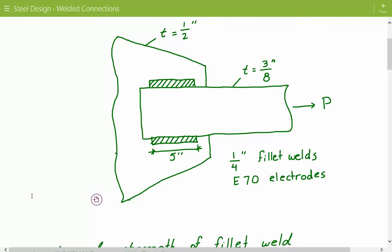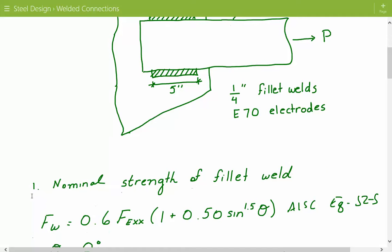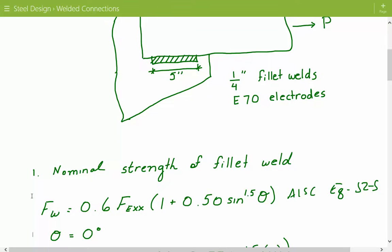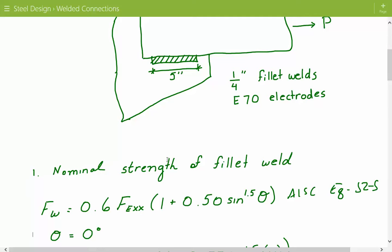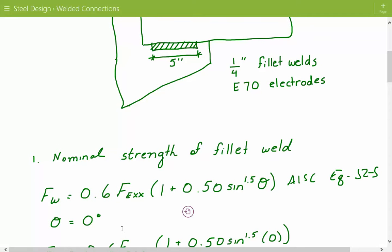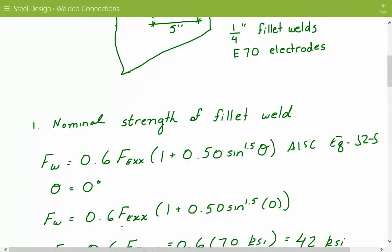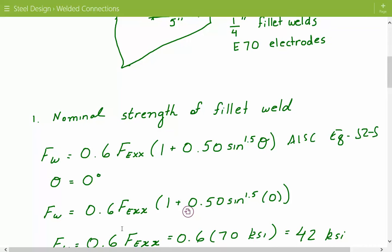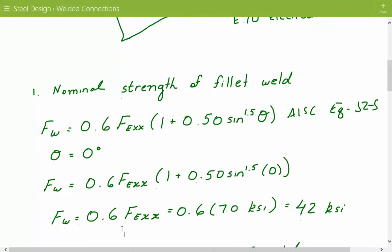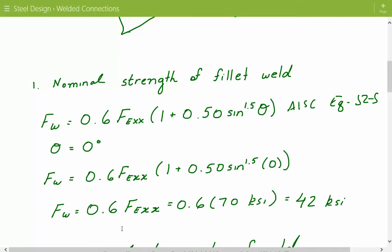The first thing we need to do is calculate the nominal strength of the fillet weld, based on AISC equation J2-5. FEXX represents the strength of the electrode, and theta represents the angle between the direction of the load and the axis of the weld. Since the load is parallel to the welds, theta equals zero, which simplifies to: nominal strength of the weld equals 0.6 times the ultimate strength of the electrode.